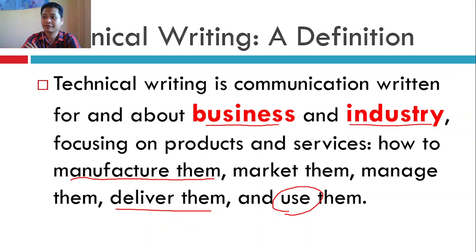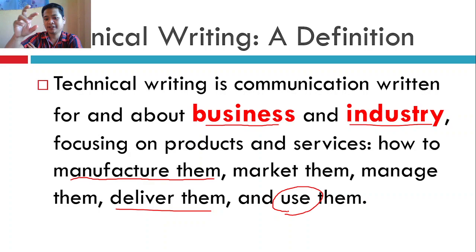How the product will be used also involves technical writing. When you buy a computer, machine, or appliance, together with it is an instruction manual. That manual contains information on how to use the item you bought. That's how important technical writing is, particularly in business and industry.